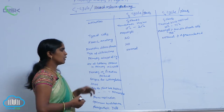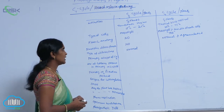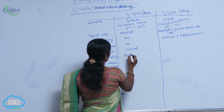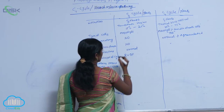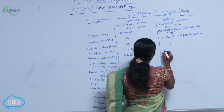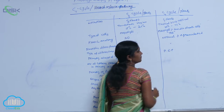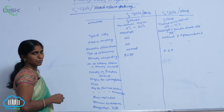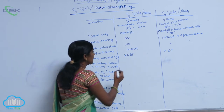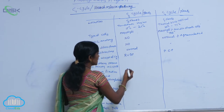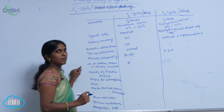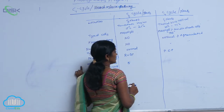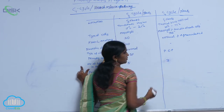What is the primary acceptor of CO2 for the C3 cycle? It is ribulose-1,5-bisphosphate, which is a 5-carbon compound. For the C4 cycle, the primary acceptor is phosphoenolpyruvic acid, which contains 3 carbons.